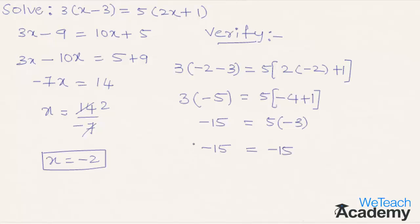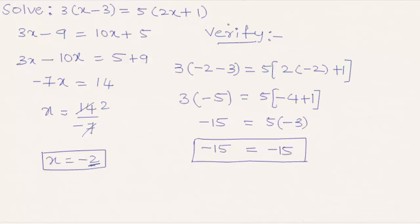LHS is equal to RHS, so we can say that x equal to minus 2 is the solution of the equation. This was the basic introduction on how to solve simple equations by the transposing method. Hope you understood the concept. Do like and subscribe to vtcacademy.com. Thanks for watching. Have a nice day.